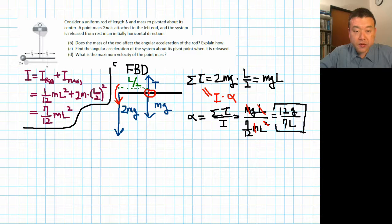We end up with 12g/(7L). You can double check that the units work out. One over second squared is what you expect for angular acceleration because radian is the real unit. So that's part C. Find the angular acceleration of the system about its pivot point. Let's move on to the last part.